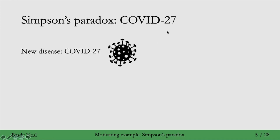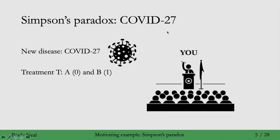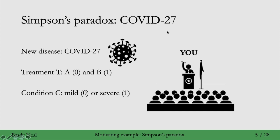Say that in a purely hypothetical scenario, there is a new disease, COVID-27. And there are two treatments for the disease, A and B, which we'll code as 0 and 1. And it's your job to decide which treatment to choose for your country. The only thing you care about is minimizing death — which treatment will cause the smallest number of people to die. An important thing about these two treatments is that treatment B is much more scarce than treatment A. You're getting data from doctors in your country who are administering treatments and collecting data on outcomes. Another thing you have data on is the condition of each patient, whether they come in with a mild condition or a severe condition, which we'll also code as 0 or 1.